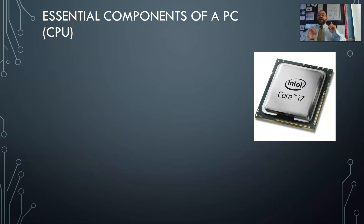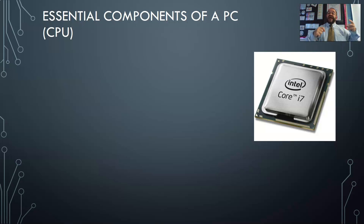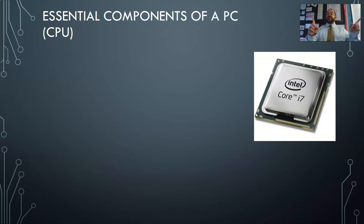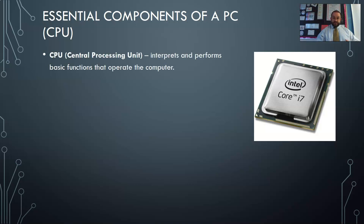CPU is not an abbreviation for 'computer' — it stands for Central Processing Unit. The CPU is better thought of as a worker being given instructions: calculate two plus two, and the worker says four. Move this file to that file — done. That's all the worker does. It performs the thinking and those actions. It doesn't store information like our brain does; it interprets and performs the basic functions that operate the computer.